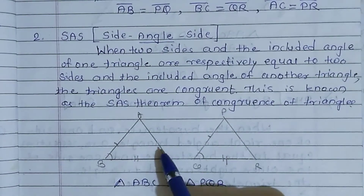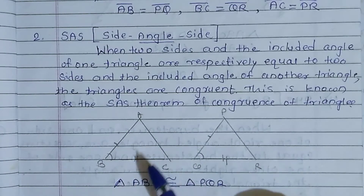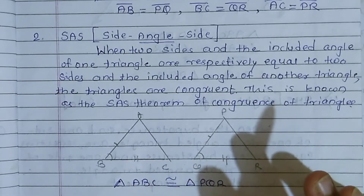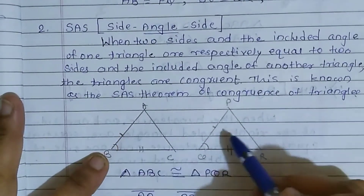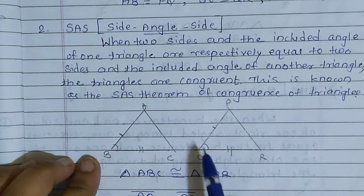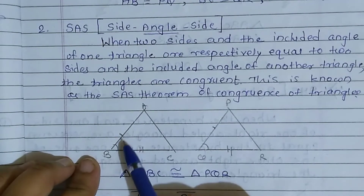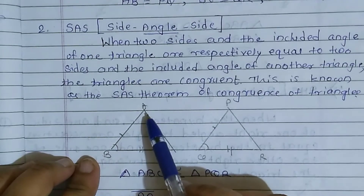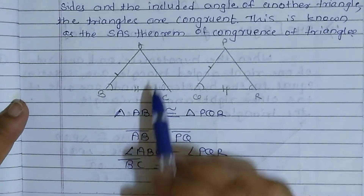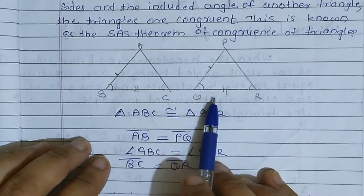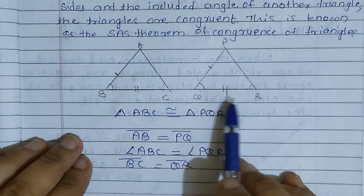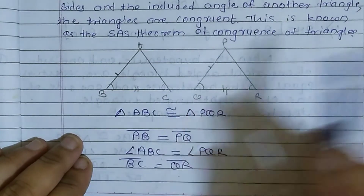अभी एक triangle की दो sides और एक angle दूसरे corresponding triangle के बराबर होंगे, तो वो दो triangle congruent होंगे। यह side इसके बराबर है और यह side इसके बराबर है। और यह angle Q के बराबर है। तो side, angle, side ऐसे ही होना चाहिए — दोनों sides के बीच में ही angle होना चाहिए। इस figure में दोनों triangle congruent हैं क्योंकि AB equals to PQ, BC equals to QR, and angle B equals to angle Q.